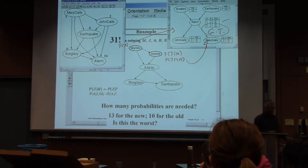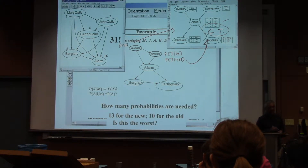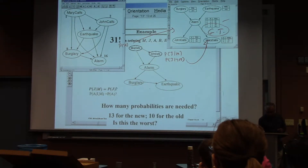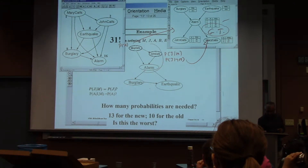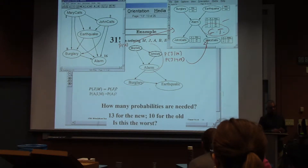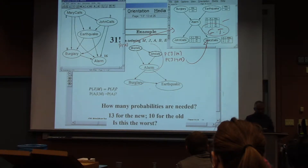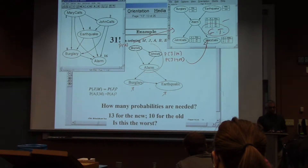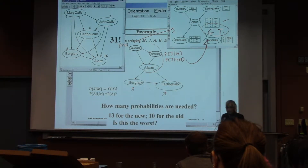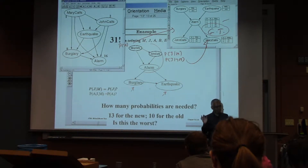A student asks: I'm slightly confused on the justification of the burglary node, particularly its dependency. The answer is: by this time there is already no alarm. The question you will be asking is, given when I put an earthquake in, if I know the status of all these things, is burglary going to be dependent on an earthquake? And that was the whole point. The moment the alarm goes off, if you actually know the earthquake occurred, then you don't need the earthquake to occur.